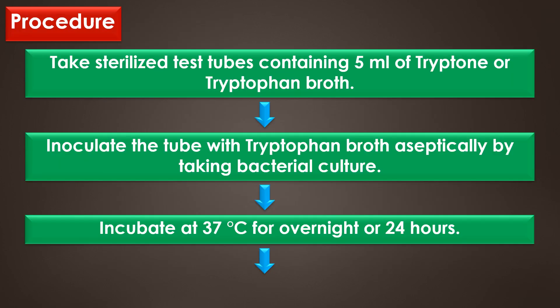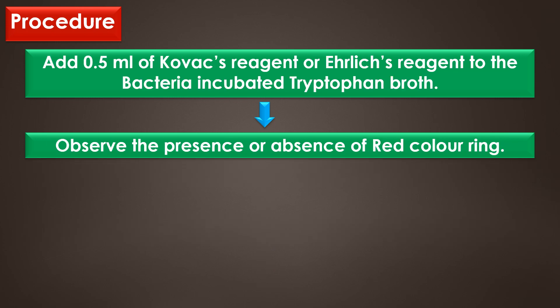Procedure: First, take a sterilized test tube containing 5 ml of tryptophan broth and inoculate the tube aseptically with the bacterial culture. Incubate the tubes at 37 degrees Celsius overnight or for 24 hours. After incubation, add 0.5 ml of Kovac's reagent or Ehrlich reagent to the bacteria-incubated tryptophan broth, and finally observe the presence or absence of the red colour ring.